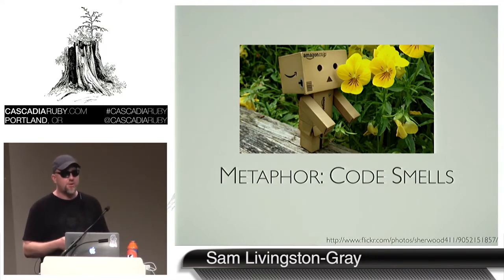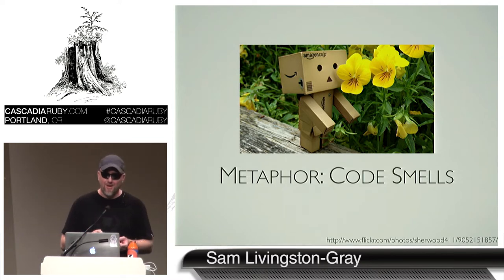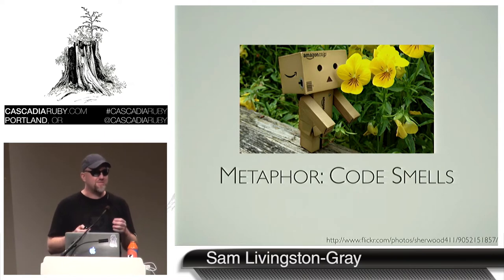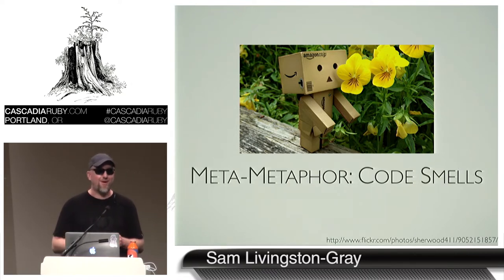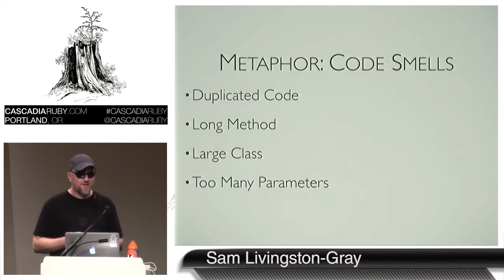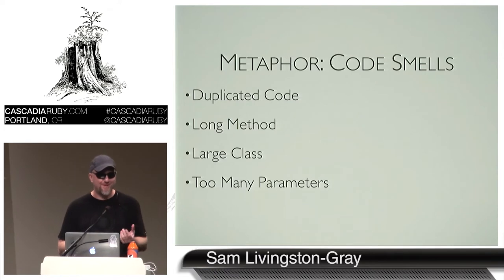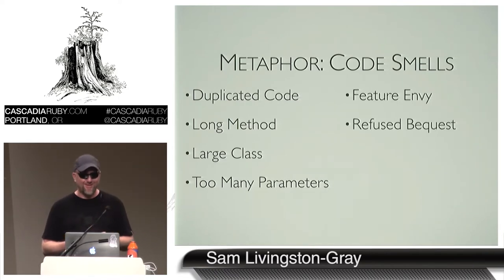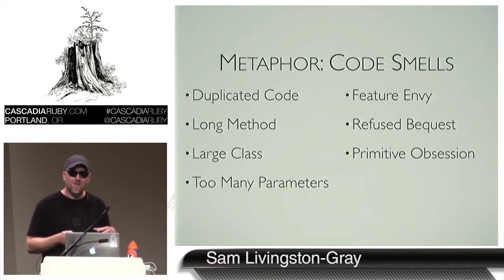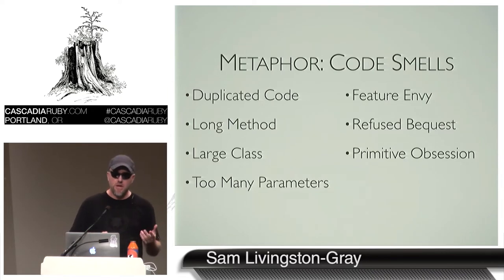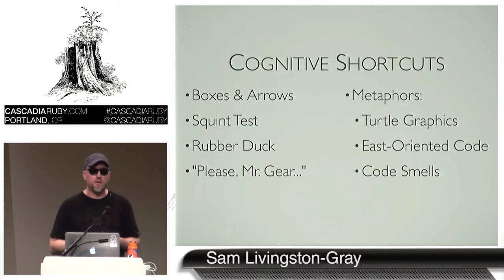Code smells are an entire category of metaphors that we use to talk about our work. In fact, the name "code smell" itself is a metaphor for anything about our code that seems off or hints at a design problem further down — which makes it a meta-metaphor. A lot of code smells have names that are extremely literal: duplicated code, long method, and so on. But some names are delightfully suggestive: feature envy, refused bequest, primitive obsession. These names have a lot in common with "Please, Mr. Gear" — they're explicitly chosen to hook into something in our social awareness, to give a name to a pattern of dysfunction, and by naming the problem, to suggest a possible solution. These are some of the shortcuts I've accumulated over the years, and I hope this can be the start of a similar collection for some of you.